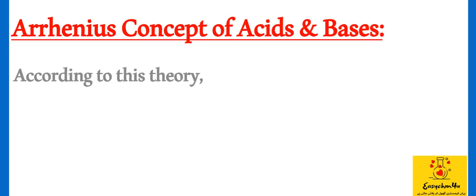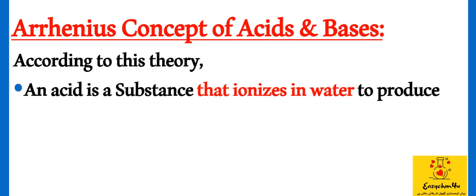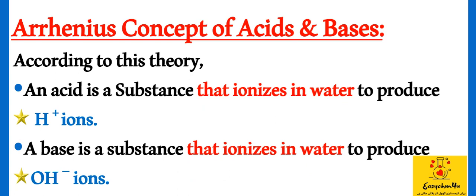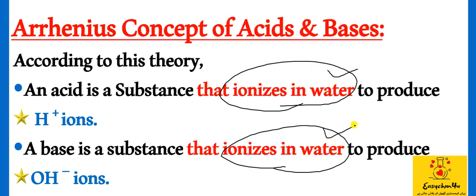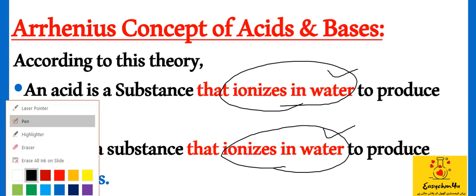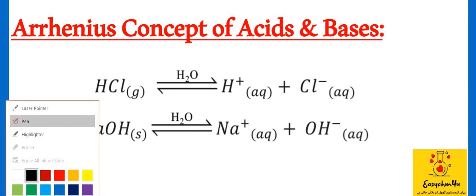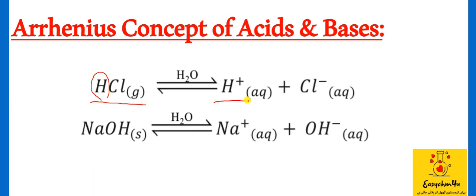And that was: An acid is a substance that ionizes in water to produce hydrogen ions. And a base is a substance that ionizes in water to produce hydroxyl ions. So basically students, here the condition is that they must ionize in water. This means they will produce hydrogen ions or hydroxyl ions only after ionizing in water. In the presence of water.